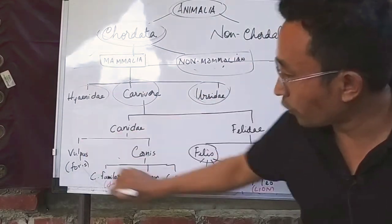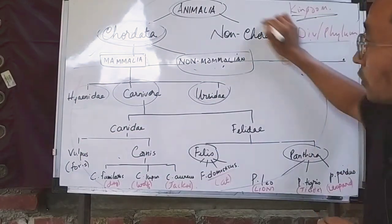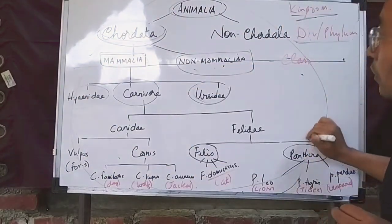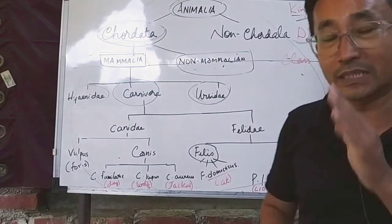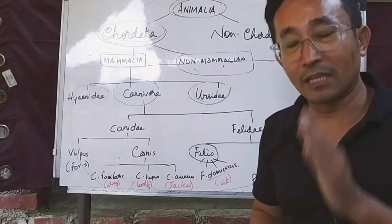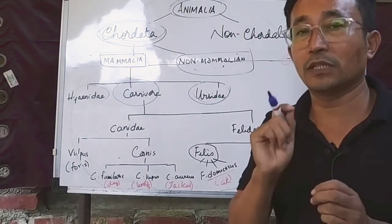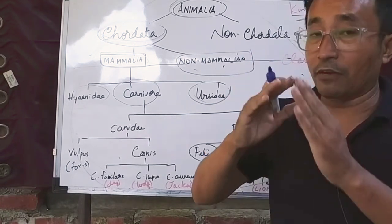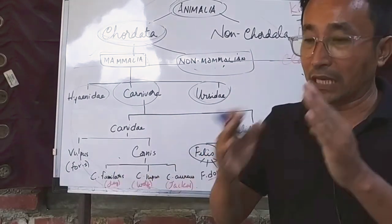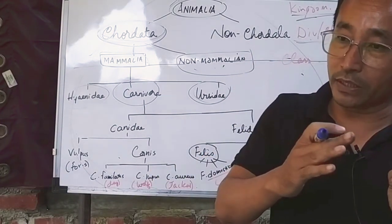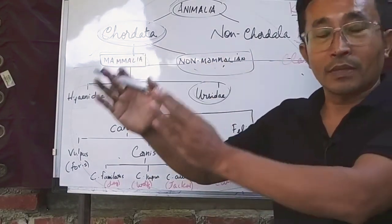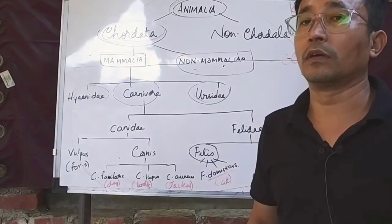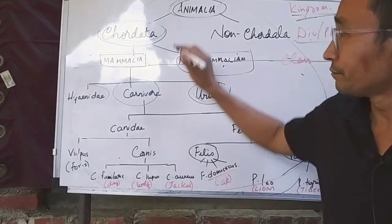All these we are talking about so far all belong to a single kingdom that is known as the animal kingdom. When there are five kingdoms, the animal kingdom is quite different from the plant kingdom. They are totally different from what we are talking about.